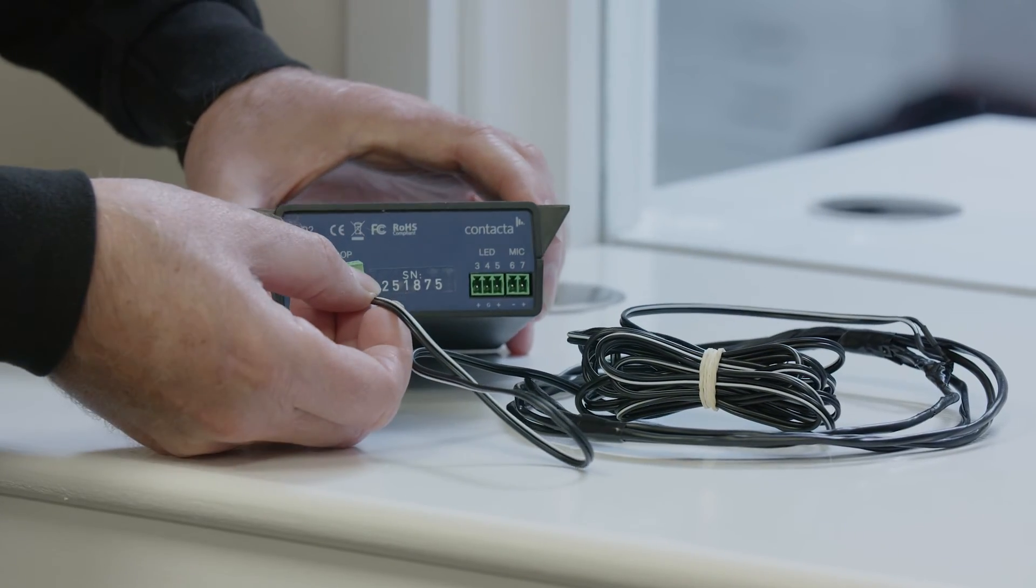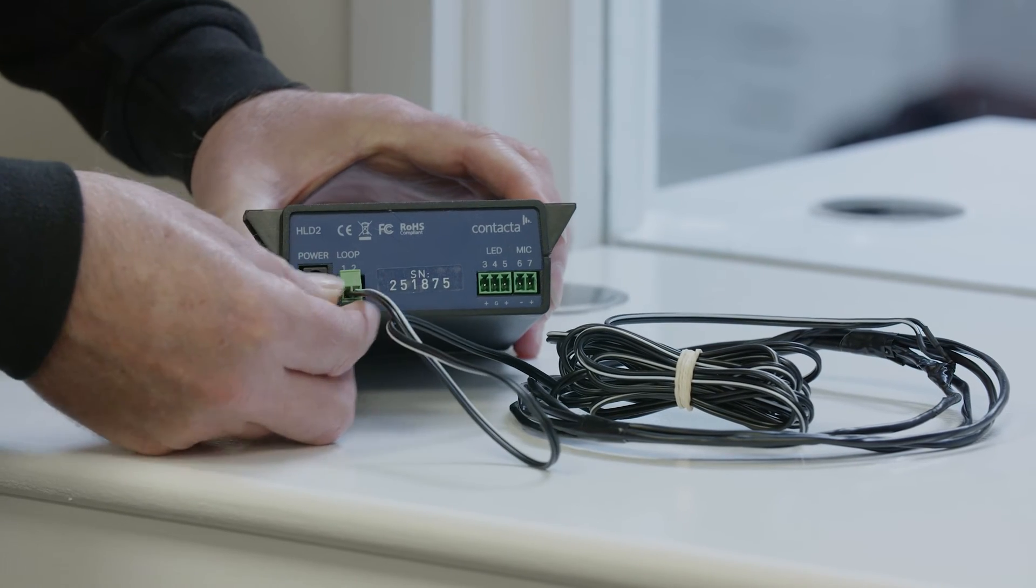Connect the hearing loop plug into the loop sockets labeled 1 and 2 at the rear of the HLD2 driver.